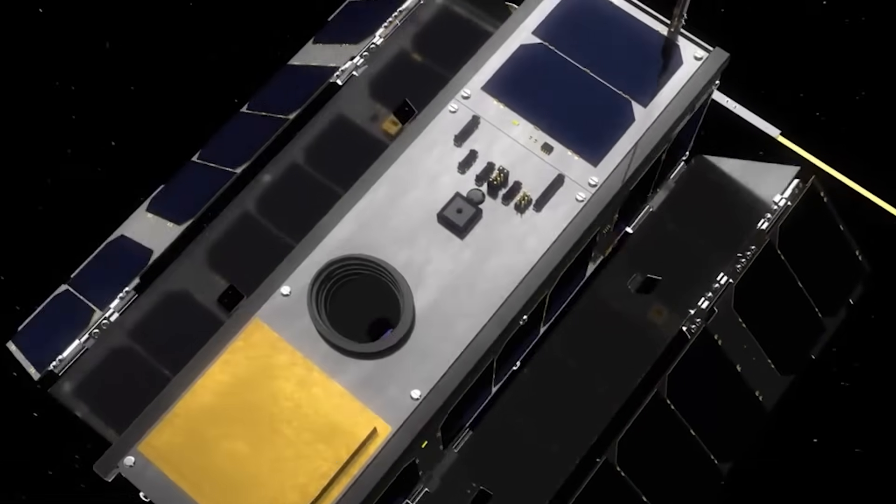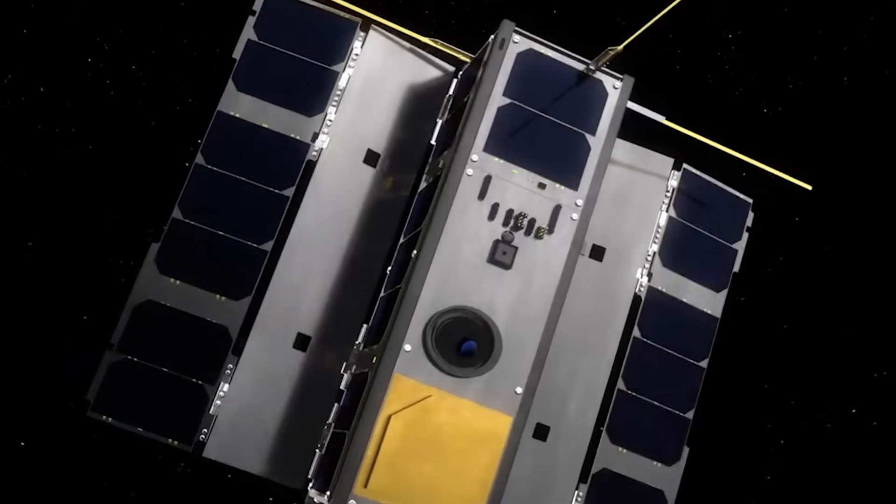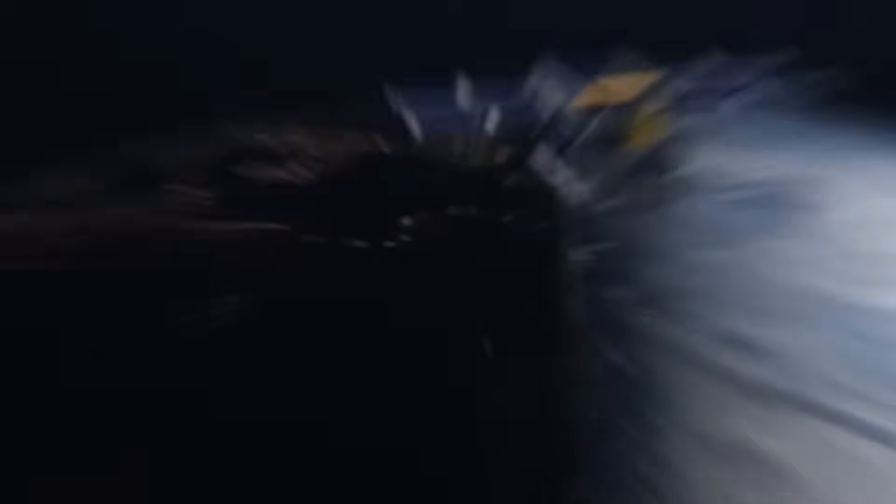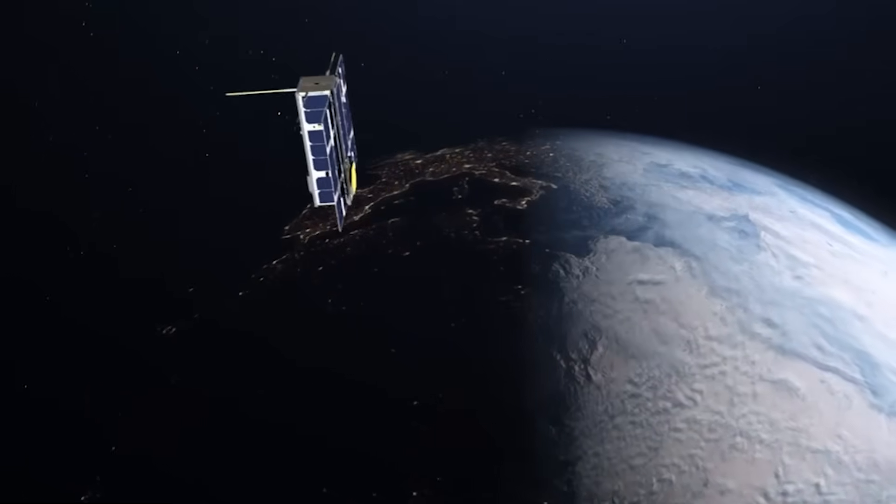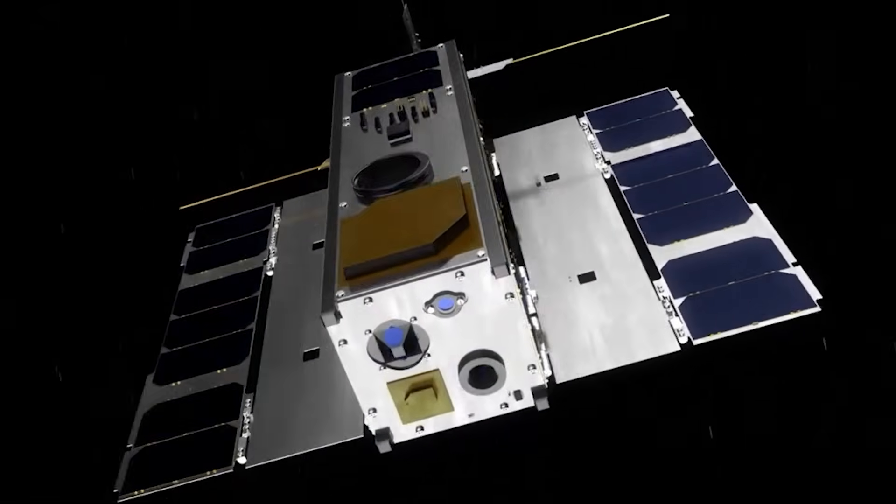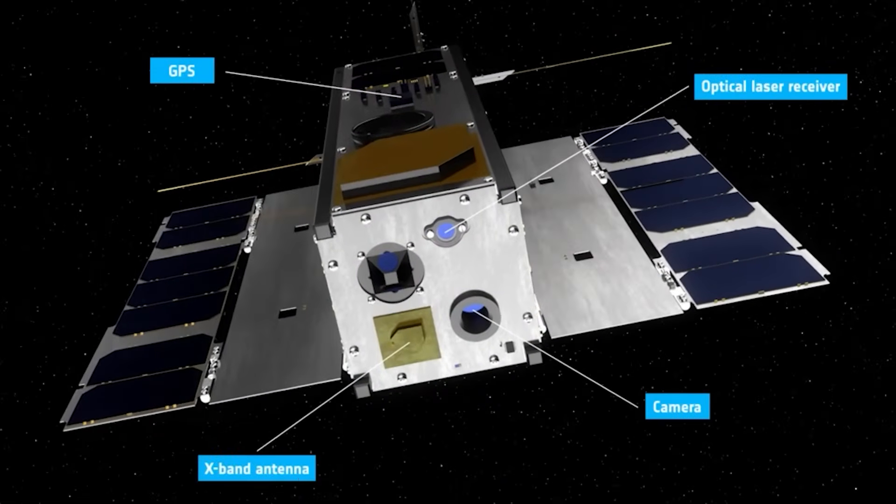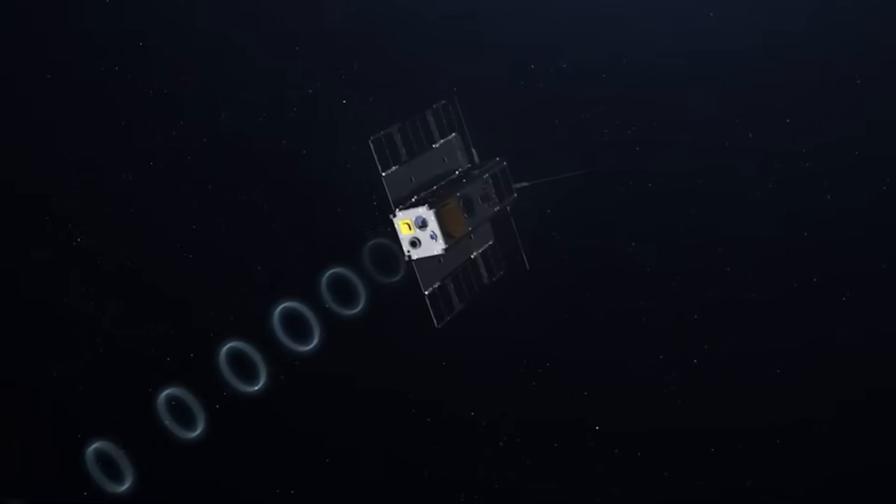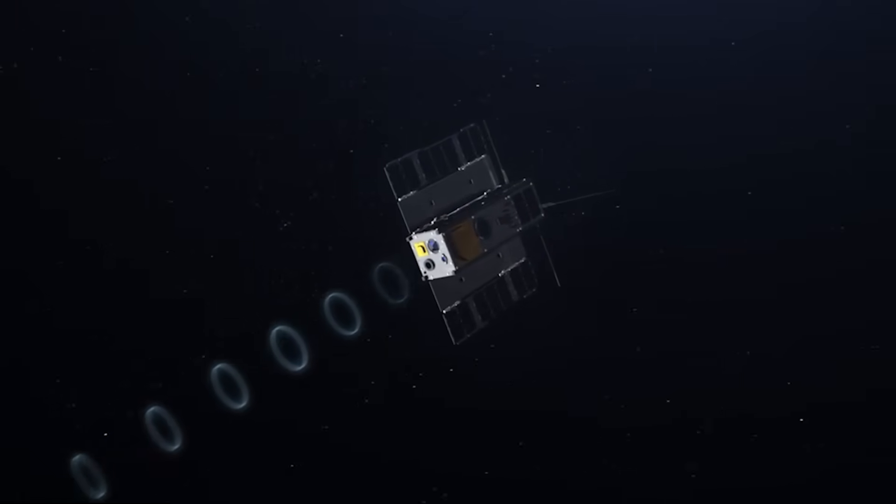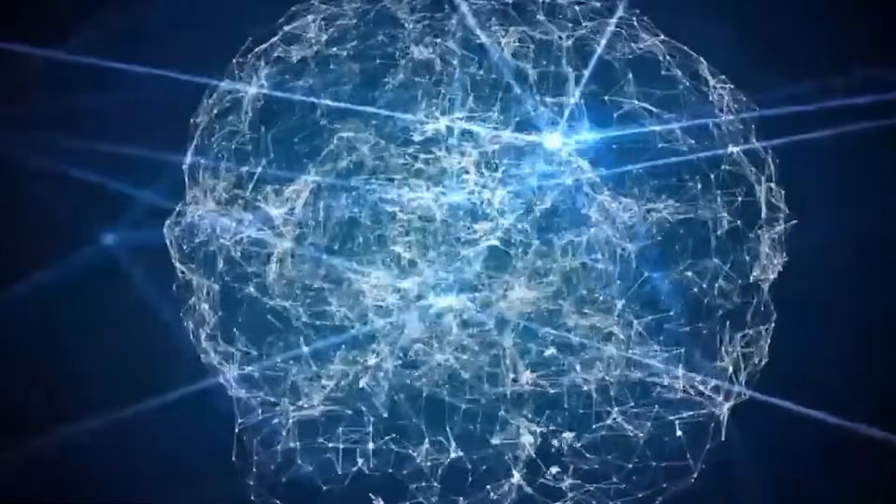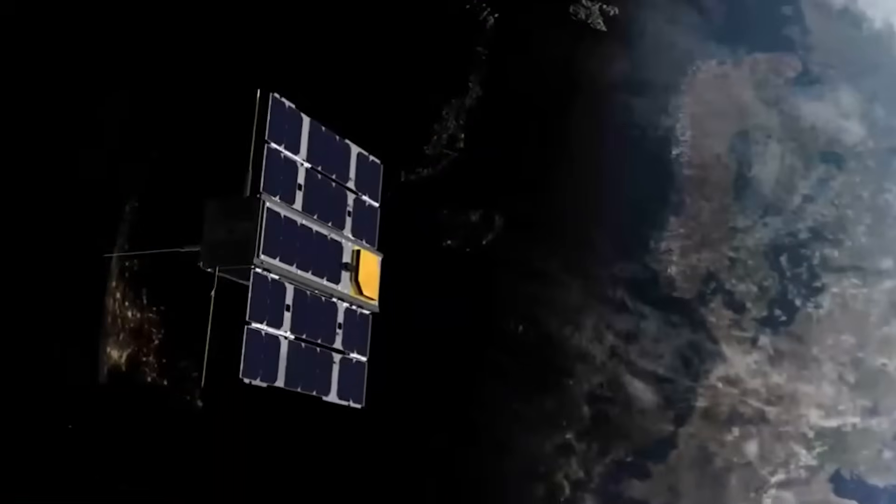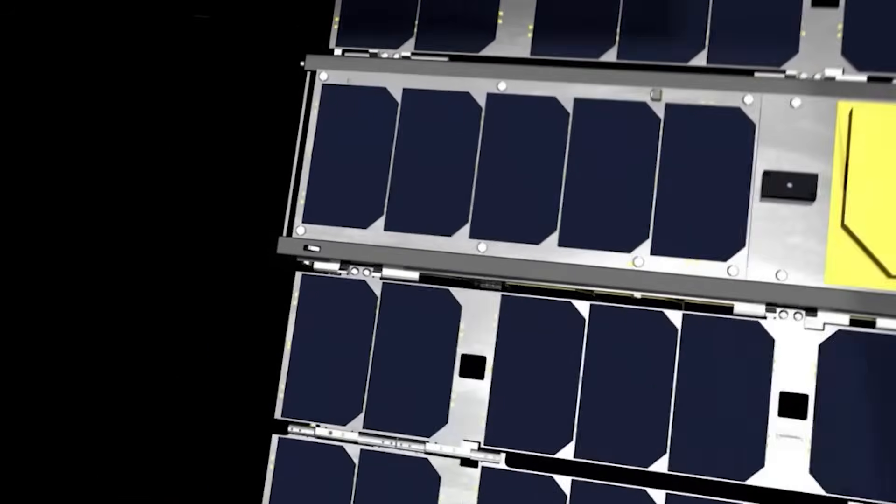Meanwhile, the European Space Agency's OPS-SAT has been testing autonomous software that can process data and adjust flight operations entirely in orbit. And it's not just exploration. Private companies are training AI models to detect space debris, optimize satellite orbits, and even schedule solar array angles for efficiency. The goal isn't to replace mission control. It's to give our machines just enough smarts to explore where we can't.